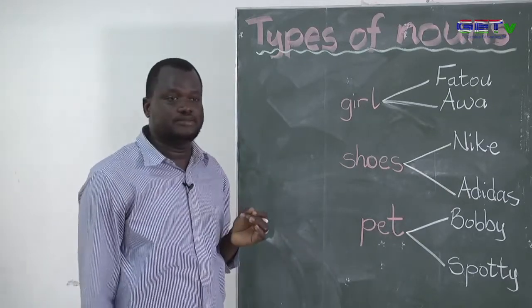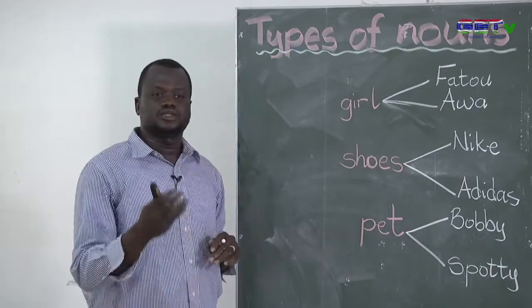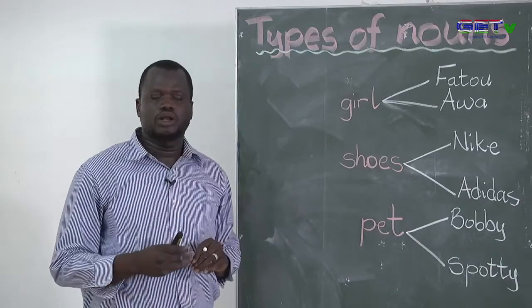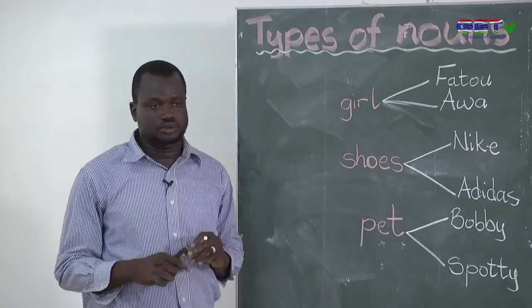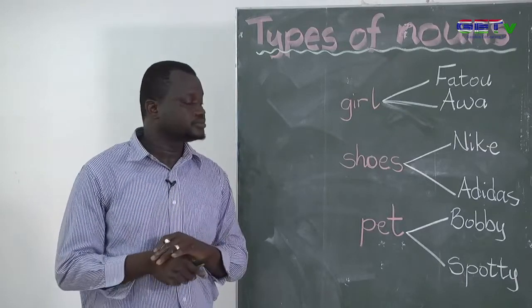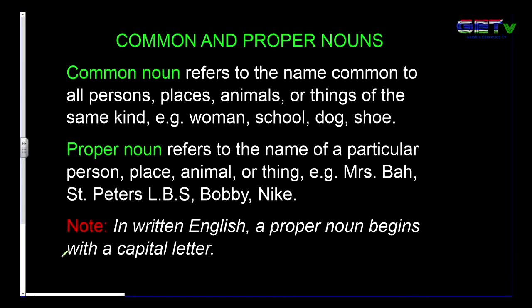Other examples of common nouns on your screen: woman, school, dog, and shoe. Proper nouns refer to the name of a particular person, place, animal, or thing. When we say girl, it's general. But if we are specific — when we say Fatou, we are saying the name of a particular girl.